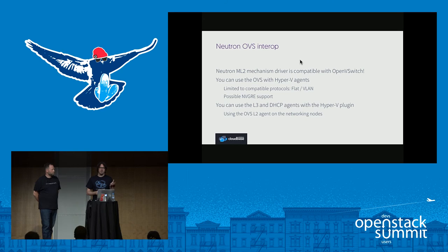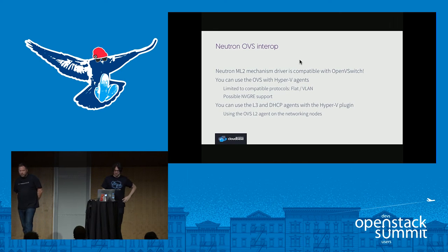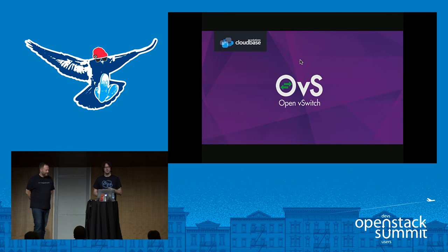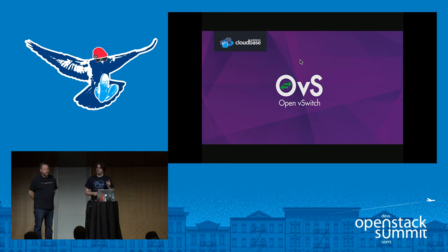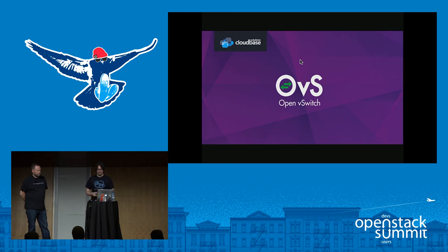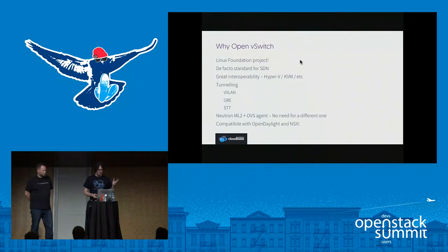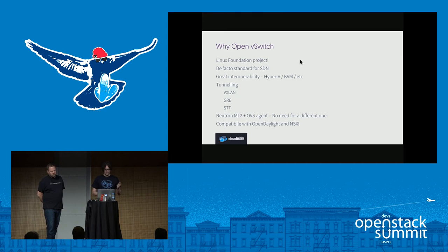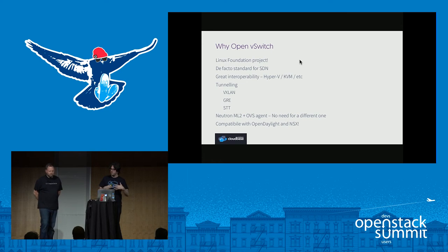The Open vSwitch project moved under the umbrella of the Linux Foundation. OVS was already the de facto standard SDN solution, and now it becomes even more relevant. If you're an SDN provider building an OVS-compliant SDN solution and you want to add Windows support, come talk to us. The Windows kernel driver is fully certified on Windows 2012, 2012 R2, and 2016 — actually the first Hyper-V extension to get certified on 2016. It's also available on client versions. The driver provides great interoperability: Hyper-V/KVM tunneling, VXLAN, GRE, STT, and compatible with Open Daylight, NSX, and we're also working with the OVN controller.